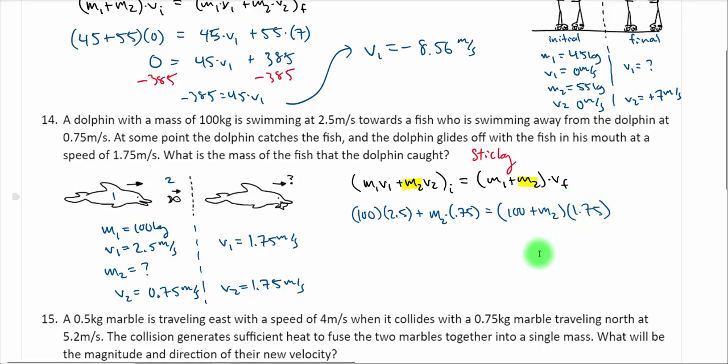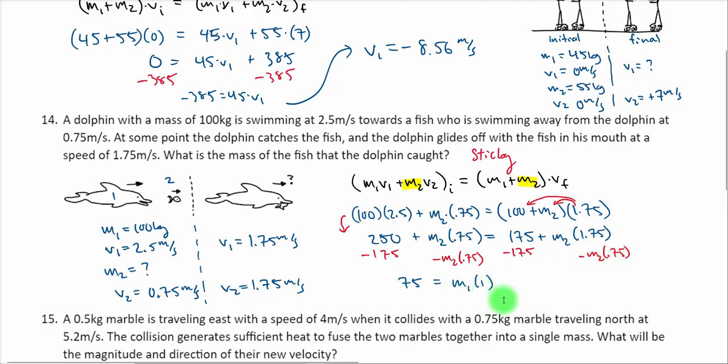V2 is also going to be 1.75 because they're moving off together. So the only thing we don't know is M2. This one's tricky because we're going to have to do some combinations of moving things around. But let's see what it looks like with the numbers that we do have. We'll have 100 multiplied by 2.5 plus unknown mass times 0.75 equals 100 plus M2 times 1.75. We're going to have to do some multiplication, some distribution. Through the magic of video editing I removed those steps. I distributed the 1.75 to both terms, get 175 plus M2 times that. With 100 times 2.5 I get 250.